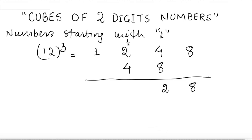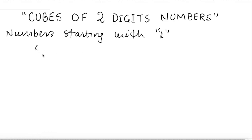I double the two middle numbers: double of 4 is 8, and double of 2 is 4. Now write 8 as it is, then add 4 + 8 = 12, so I write 2 and carry over 1. Then 1 + 2 = 3, and 3 + 4 = 7 with no carryover, so 1 comes as it is. The cube of 12 is 1728.